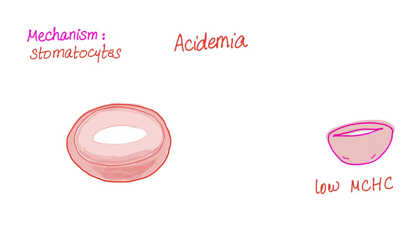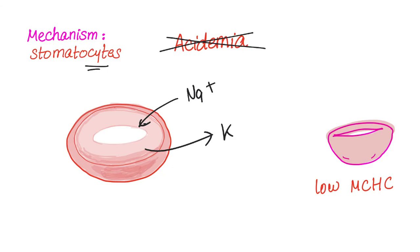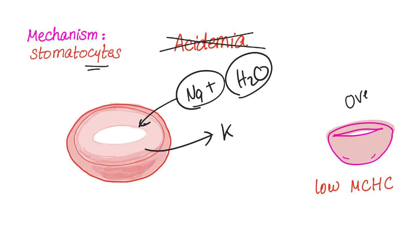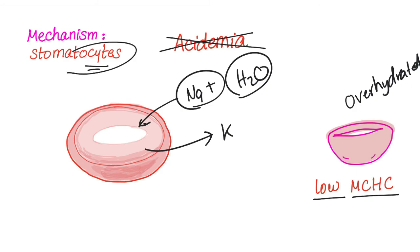Now, what's the mechanism of the abnormal — the stomatocytes? In hereditary stomatocytosis, there is a genetic problem causing sodium to go into the cell and potassium to go out of the cell. When sodium comes in, water will follow. The cell is now over-hydrated. When the cell is over-hydrated, hemoglobin is less concentrated, so we have low MCHC. This is the story of the stomatocyte — instead of a circular central pallor, we have a slit-shaped central pallor.